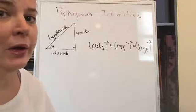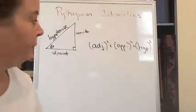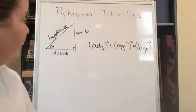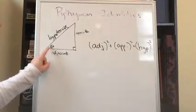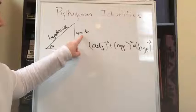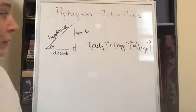Okay, so today we're going to talk about Pythagorean identities. We all know that this side attached to the angle we're talking about is adjacent. The one across from it is opposite.